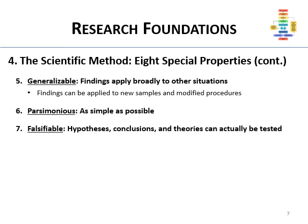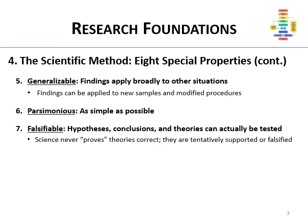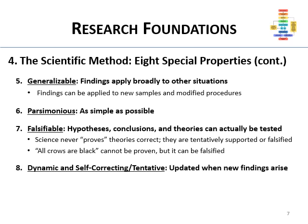Falsifiable is a very important characteristic of the scientific method. You have to be able to test things — and not only test them, but you have to be able to show that they're wrong. There have to be ways to prove something is wrong. Science never actually proves anything is correct; we tentatively support things, or we say that's false. You can prove things false, but we never actually know truth. For example, 'all crows are black' cannot be proven — you can't gather every crow in the universe — but you can falsify it by finding just one crow that's not black.